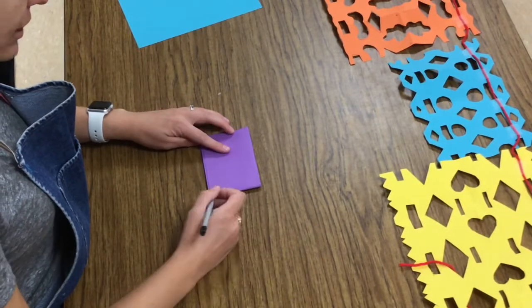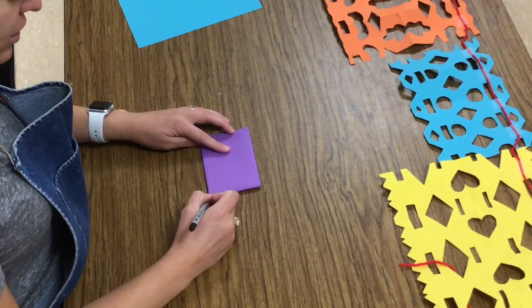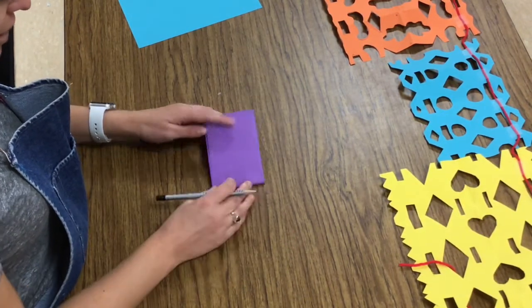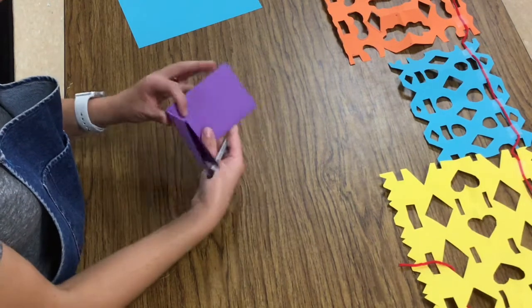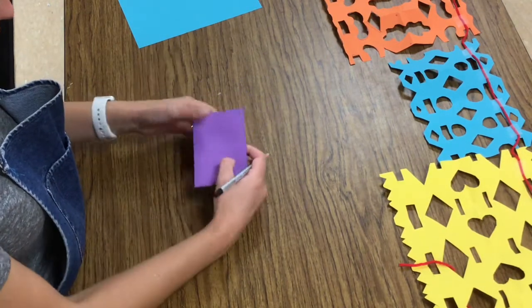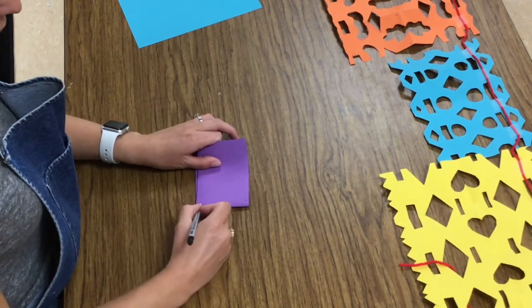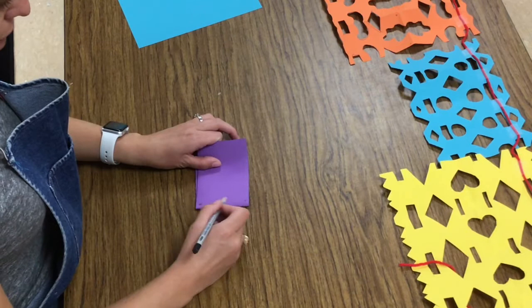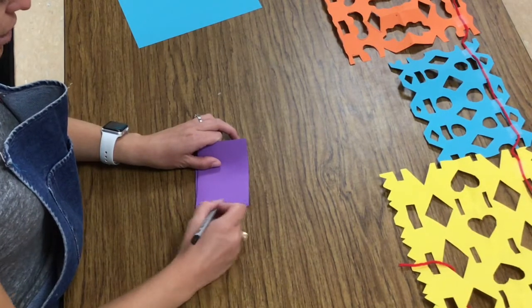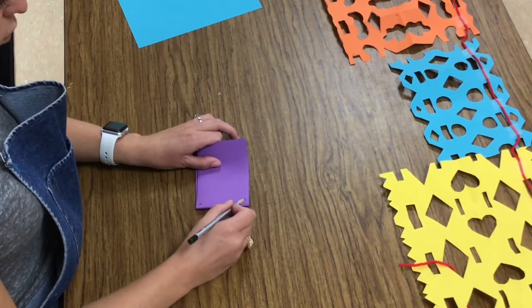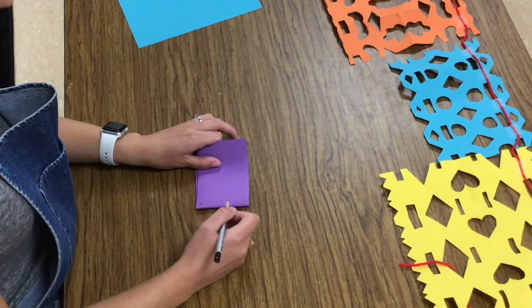All right. With a pencil, I need to make a dot on either side of the folded corner. So if my paper folds like this, I see it makes a V. I need to make a dot on the V side. Dot, dot. These two dots are reminding me that I cannot cut all the way across on this folded side. If I do that, my paper will be cut in half.